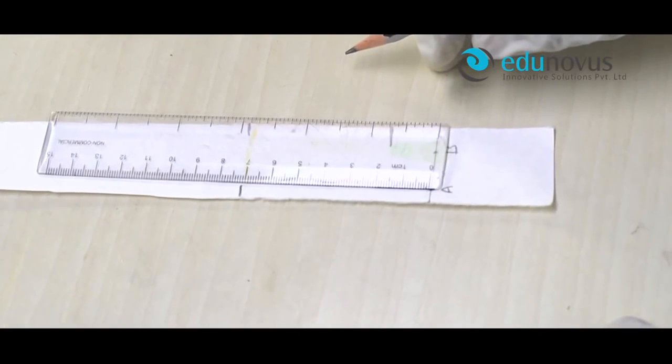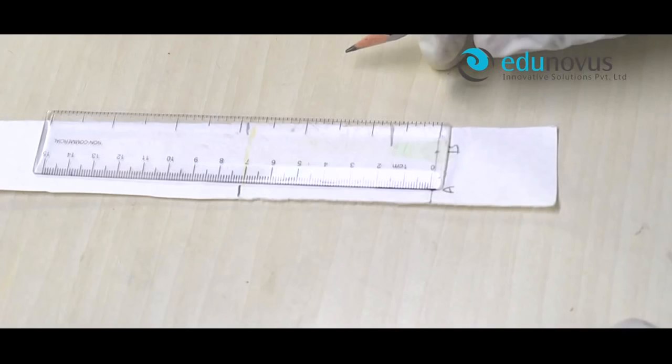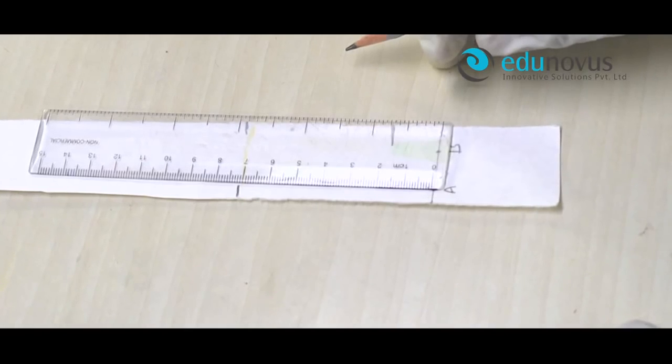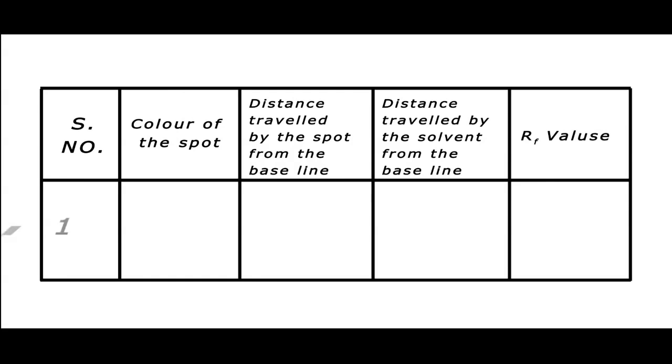Tabulate these values in the observation table and calculate the RF values. Color of the spot: yellow. Distance traveled by the spot from the baseline is 7.4 cm. Distance traveled by the solvent from the baseline is 7.4 cm, and its respective RF value is 1.